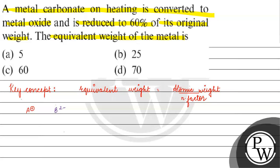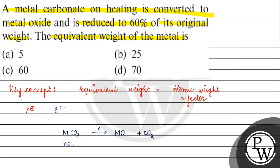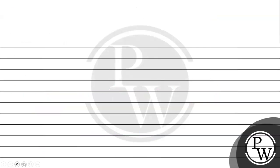For this question, we have a metal carbonate MCO₃ which on heating gives MO and CO₂. If we take the mass of MCO₃ as 100 grams initially, after heating the metal oxide will be 60 grams and carbon dioxide will be 40 grams.